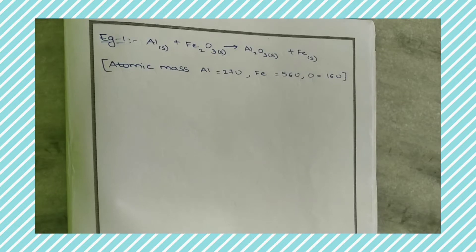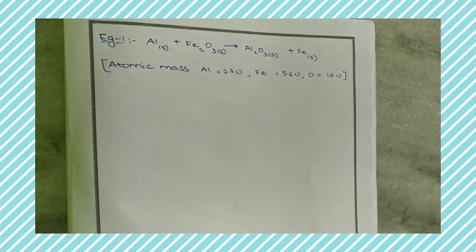Example: Aluminum plus Fe2O3 gives rise to Al2O3 plus Fe. Atomic mass of Aluminum is equal to 27 units, Iron is equal to 56 units, Oxygen is 16 units.